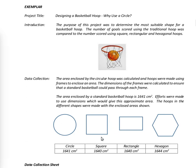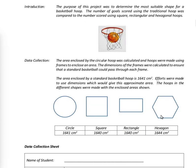The hoops in the different shapes were made with the enclosed areas shown. You have the square at 1,640 cm squared, rectangle at 1,640 cm squared, hexagon at 1,644 cm squared. So they tried to get the various shapes enclosing the same area.